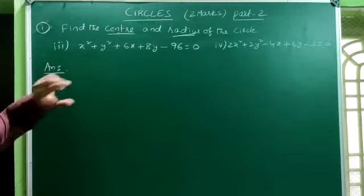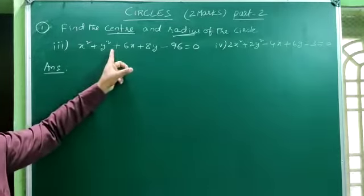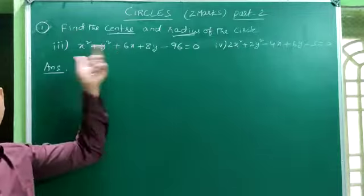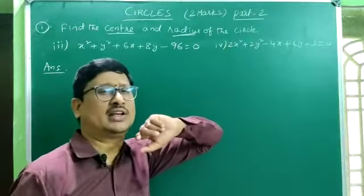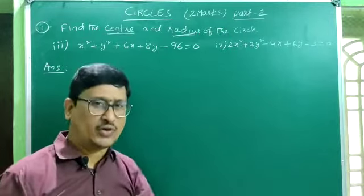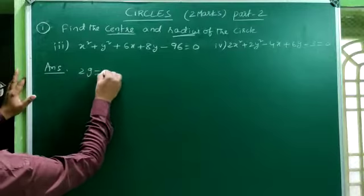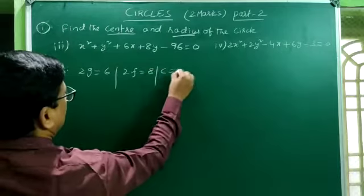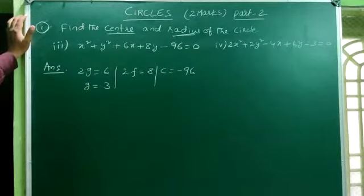First, check the given equation. The x² coefficient and y² coefficient are both equal to 1, so this is already in the general form. Comparing with x² + y² + 2gx + 2fy + c = 0, we get 2g = 6 so g = 3, 2f = 8 so f = 4, and c = −96.